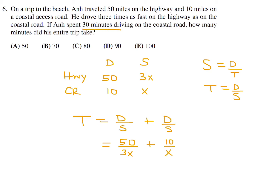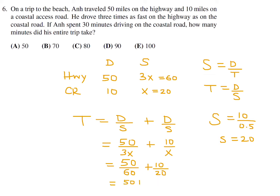We don't know x yet, but they told us the coastal road took 30 minutes. Using speed equals distance over time: speed on the coastal road is 10 over 0.5 hours, which equals 20. So x equals 20 and 3x equals 60. Going back to the formula: 50 over 60 plus 10 over 20, which is 50 over 60 plus 30 over 60, giving 80 over 60, or 4 over 3 hours, which is 80 minutes. Number 6, the answer is C.